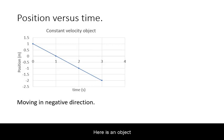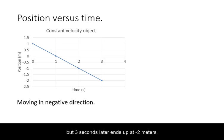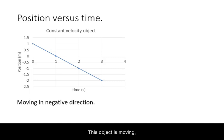Here is an object that starts at positive 1 meter, but 3 seconds later ends up at negative 2 meters. This object is moving at constant velocity in the negative direction.